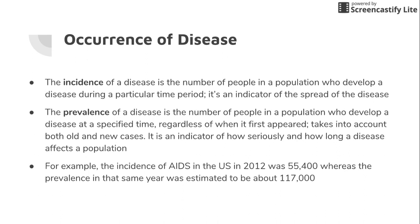We also look at disease occurrence using incidence and prevalence. Incidence is the number of new cases within a particular time period, showing how fast a disease is spreading. Prevalence counts everyone who has the disease within a certain time, including both new and old cases. For example, in 2012, 55,000 people were newly diagnosed with AIDS — that's incidence — whereas prevalence was 117,000 total people with AIDS, combining new and existing cases.